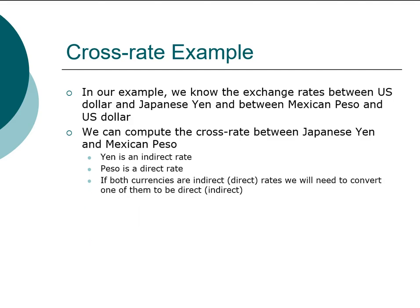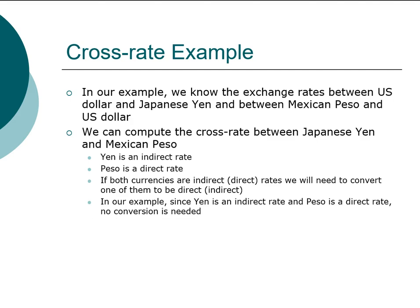If both currencies had the same quotation type — meaning both are direct or both are indirect — we would need to do some conversion to make one direct and one indirect. But in our example, since peso is already a direct quote and yen is an indirect quote, we don't need to do any conversion.